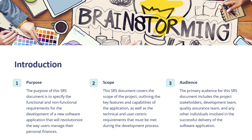The scope of this SRS document covers the scope of the project, outlining the key features and capabilities of the application as well as the technical and user-centric requirements that must be met during the development process. The primary audience for this SRS document includes the project stakeholders, development team, quality assurance team, and any other individuals involved in the successful delivery of the software application.